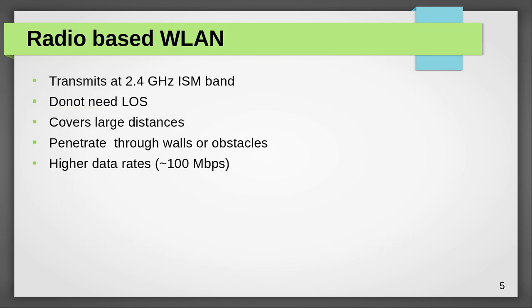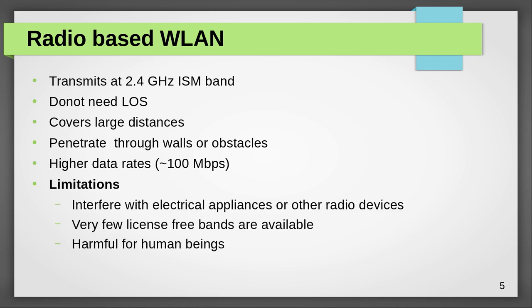Now let us see about the radio-based wireless LAN. It transmits at the 2.4 GHz ISM band, does not need any line of sight, can cover large distances, can penetrate through walls or obstacles, and provides data rates up to 100 megabits per second and more in recent standards. Some limitations: just opposite to infrared, radio-based wireless LAN can interfere with electrical appliances or other radio devices, very few license-free bands are available, and it is harmful for human beings.